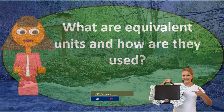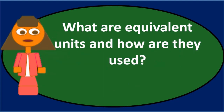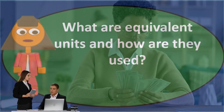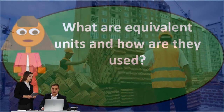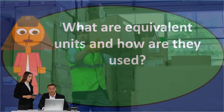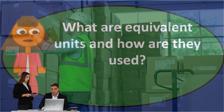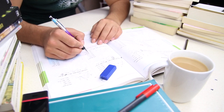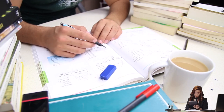We can expand on the types of equivalent units typically used. We start by thinking about actual units — some completed, some still in process. When units are in process, we convert them to equivalent units in two ways: one with relation to materials, and the other with relation to conversion costs. Materials refers to the raw materials going into the process, while conversion covers the things that transform those materials — such as overhead and labor. We then estimate equivalent units separately for materials and for conversion.